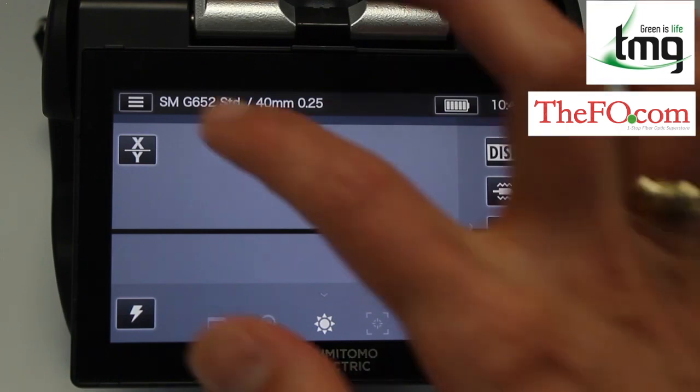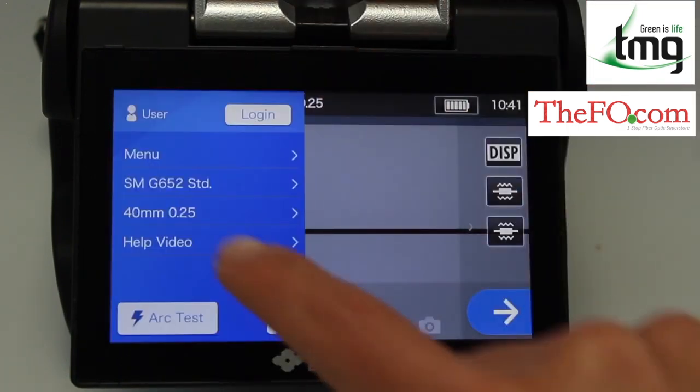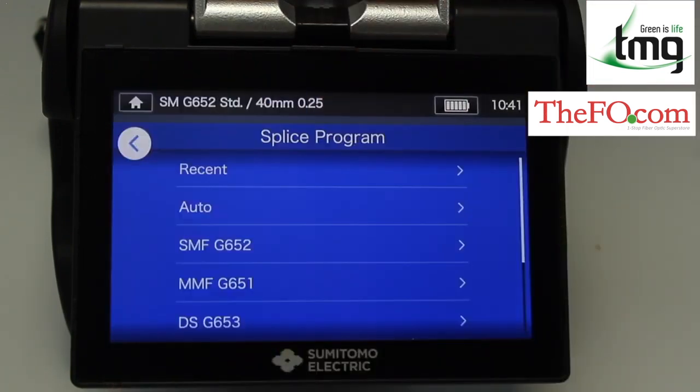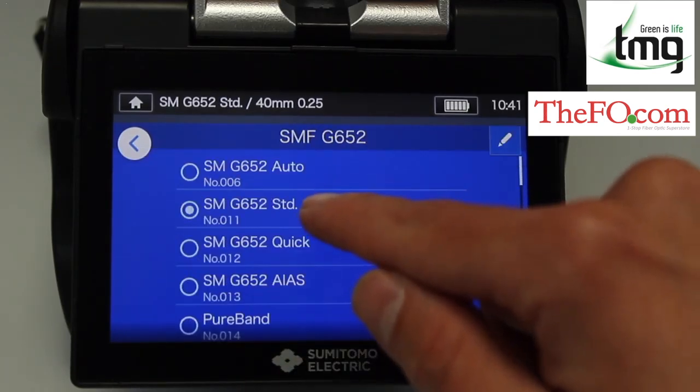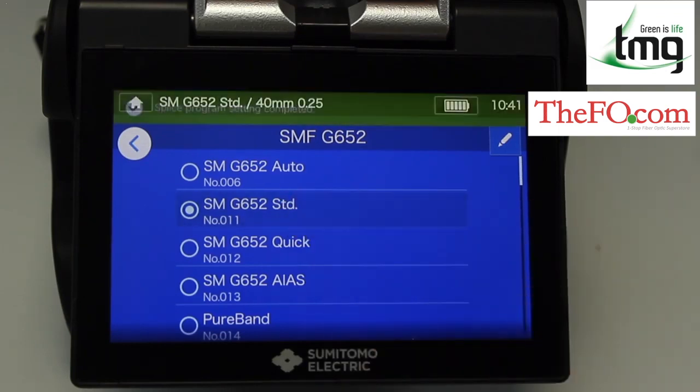So now I'm going to set up the splicer in manual mode. I'm going to select the fiber type, so I'm going to go to G652 standard. I'm going to make sure standard is selected.